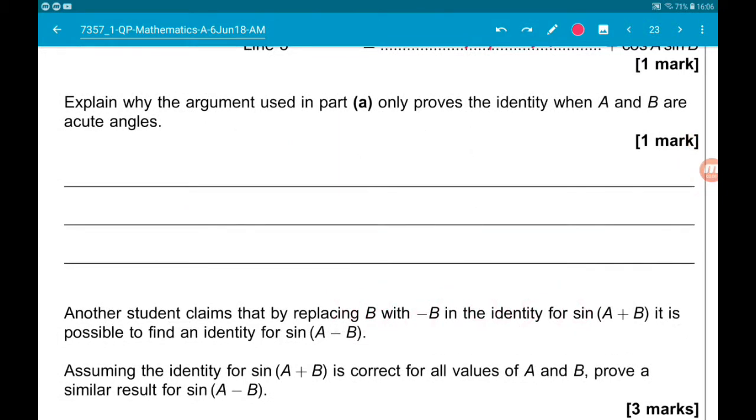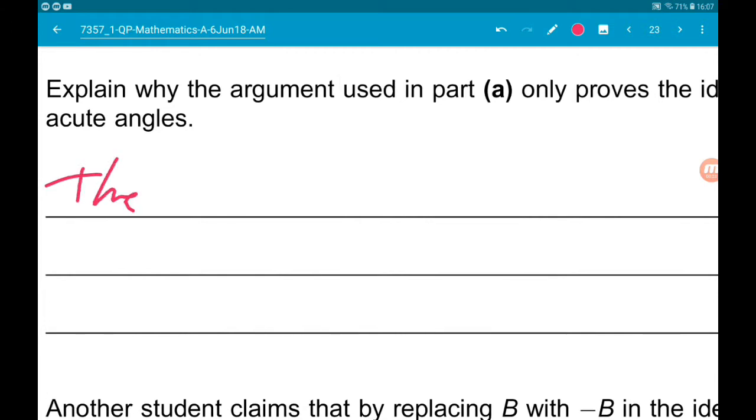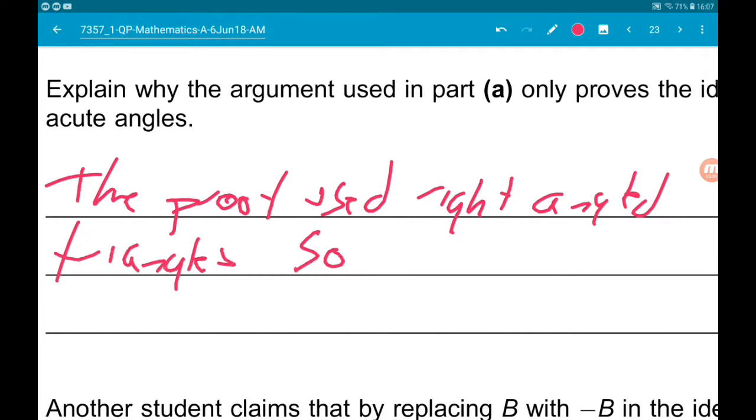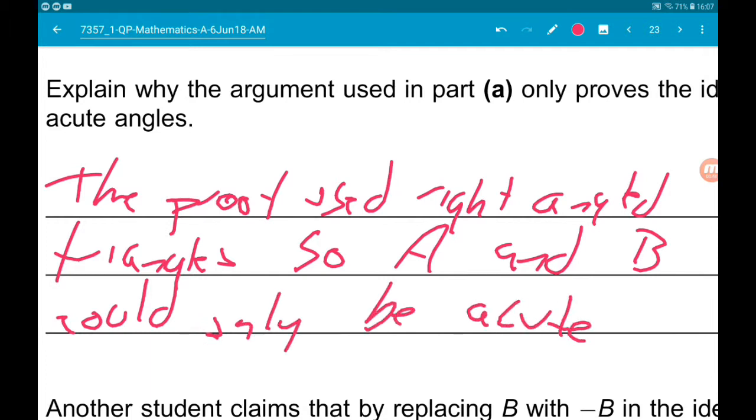Part C says to explain why the argument used in part A only proves the identity when A and B are acute angles. So remember, acute angles are angles less than 90 degrees. Our proof used right angled triangles. So the proof used right angled triangles. So A and B could only be acute. Cool.